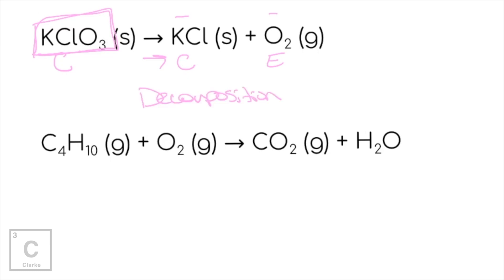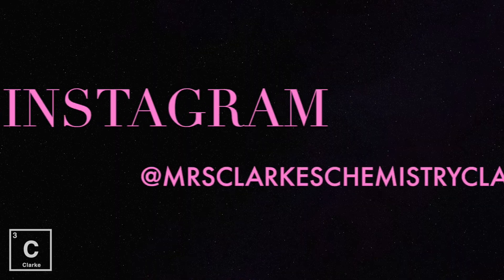Last example: this is a hydrocarbon — butane, the fuel in heavy-duty blowtorch lighters. Fuels need oxygen to burn, and they produce carbon dioxide and water. This is combustion. Those were the five types of reactions. If your teacher requires you to predict the product, stay tuned for that video. Until next time, bye y'all!